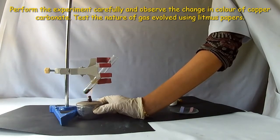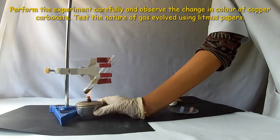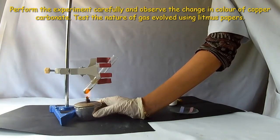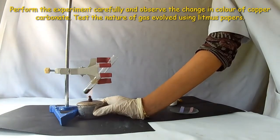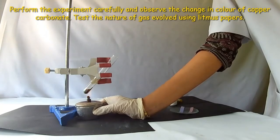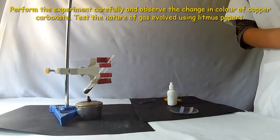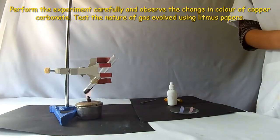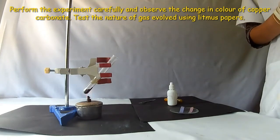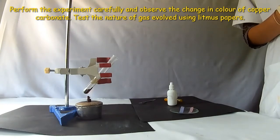See, the salt color is changing from green to black. The green color salt changes its color to black. Copper carbonate which is a green color salt decomposes forming copper oxide and carbon dioxide.